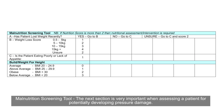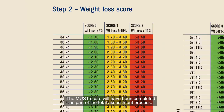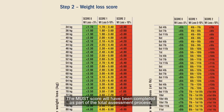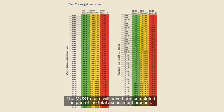The next section is very important when assessing a patient for potentially developing pressure damage — the Malnutrition Universal Screening Tool. The MUST score will have been completed as part of the total assessment process.